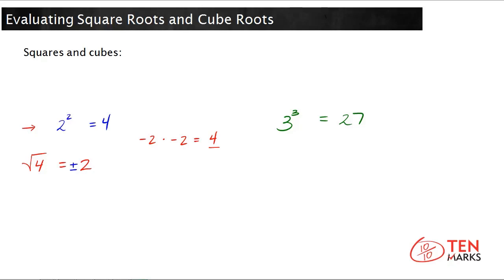What happens with the cube root when it comes to positive and negative? A cube root reverses the cube process, where you multiply a number by itself three times. Let's try negative 3 times negative 3 times negative 3. Multiplying the first two negative 3's gives you positive 9, but then multiplying by negative 3 again gives a negative answer. So you cannot have a negative cube root of a positive number — you can't multiply a number by itself three times and get a positive result from a negative base. So the cube root of 27 cannot be negative.